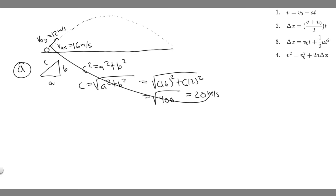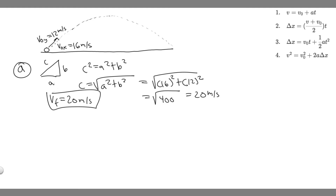So the initial velocity is 20 meters per second. Since the ball lands at the same elevation, the initial and final speeds are equal. Therefore, V-final equals 20 meters per second — that's the answer to Part A.